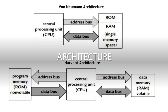Coming to Harvard architecture, you can see program memory, a central processing unit, and data memory connected across with data and address buses. This is a type of architecture where there are separate memory spaces — data memory and program memory — two separate memory spaces for both the instruction and the data.